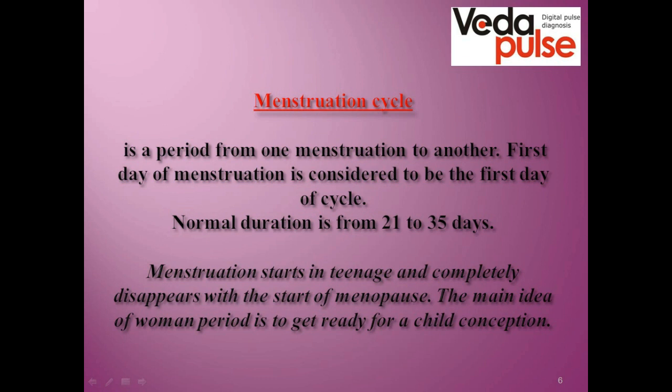The cycle starts in the teenage years at 12–13 years old. The first menstruation is called menarche — that is when puberty starts and the first ovum is produced and is ready for childbearing. From that moment, the organism starts working in a cyclic mode: every month a new ovum is produced and female hormones interchange. This continues until menopause, when the hormonal background is exhausted and there is no more hormonal activity or cycles.